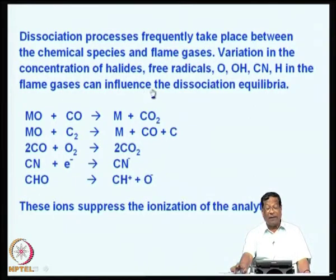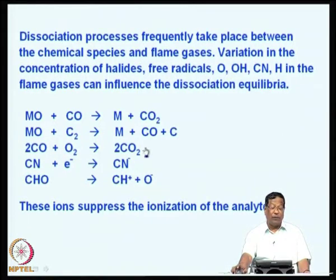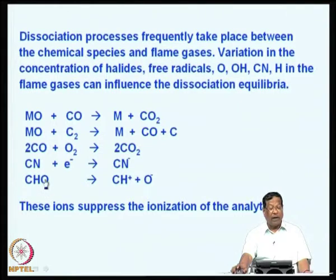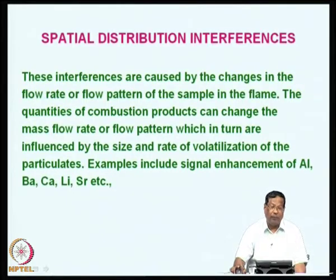Variation in the concentration of halides, free radicals, oxygen, OH radicals, cyanogen radicals, and hydrogen—all these gases are present in the flame of atomic absorption. Their presence in the flame gases can influence the dissociation equilibria. We expect reactions such as: metal oxide reacting with CO to give metal plus CO₂; metal oxide reacting with carbon to give metal and CO; cyanogen picking up an electron to form cyanide ion; and CHO radical changing to CH⁺. These ions can readily suppress the ionization of the analyte, attenuating the signal.